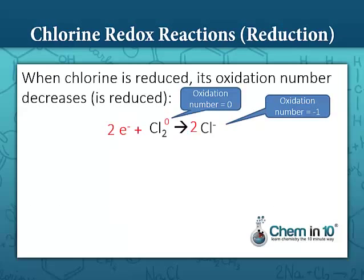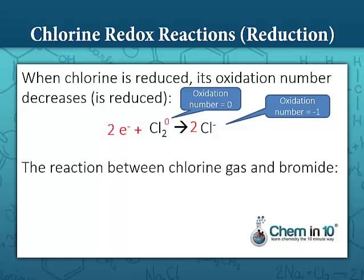In contrast, when chlorine is reduced, remember its oxidation number is similarly reduced. An example of a reaction where chlorine's oxidation number is reduced is a reaction between chlorine gas and bromide — bromide being the ion of bromine. In this reaction, chlorine is reduced: it goes from an oxidation number of zero to an oxidation number of negative one.